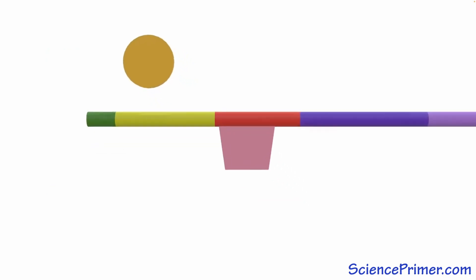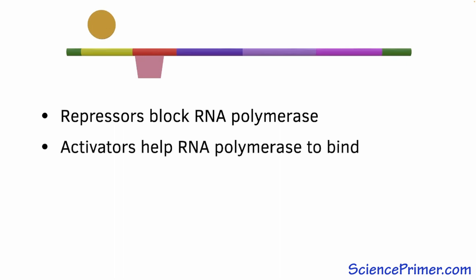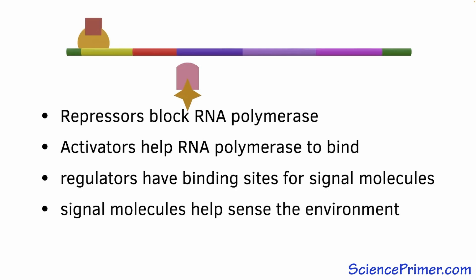Features of the lac operon described here illustrate general patterns of gene regulation in prokaryotes. Repressors typically bind to the operator region and either block the binding of RNA polymerase or prevent it from moving down the DNA if it does bind, while activators bind further upstream and help RNA polymerase to bind. Most regulators have a binding site for signal molecules like allolactose or cyclic AMP, and interactions with these signals allow cells to use activators and repressors to control gene expression based on environmental conditions. A combination of specific and global regulators allow prokaryotes to regulate gene expression based on both general conditions and the availability or need for specific resources.